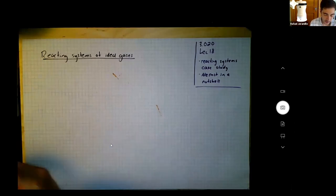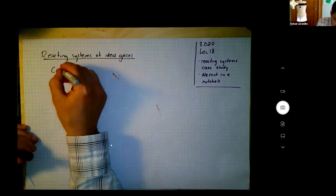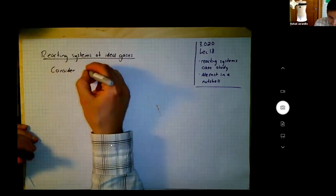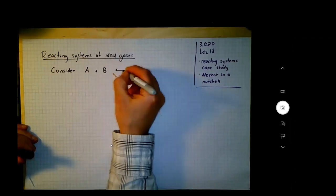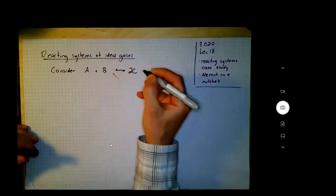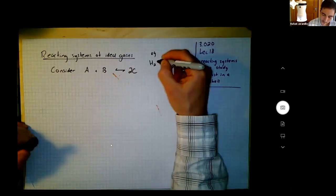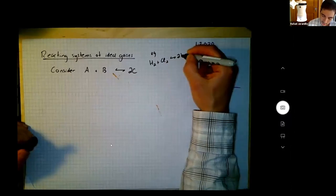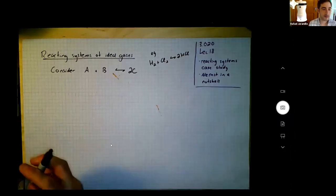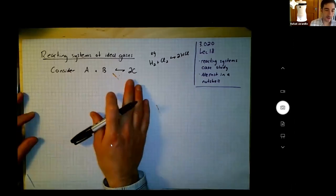We're going to consider a reaction of the form A plus B going to 2C. Later on, I'm going to plug in some numbers. I plugged in numbers for hydrogen plus chlorine going to 2HCl, which is all in the gas phase. This is also generically discussed in the textbook, so that's convenient.